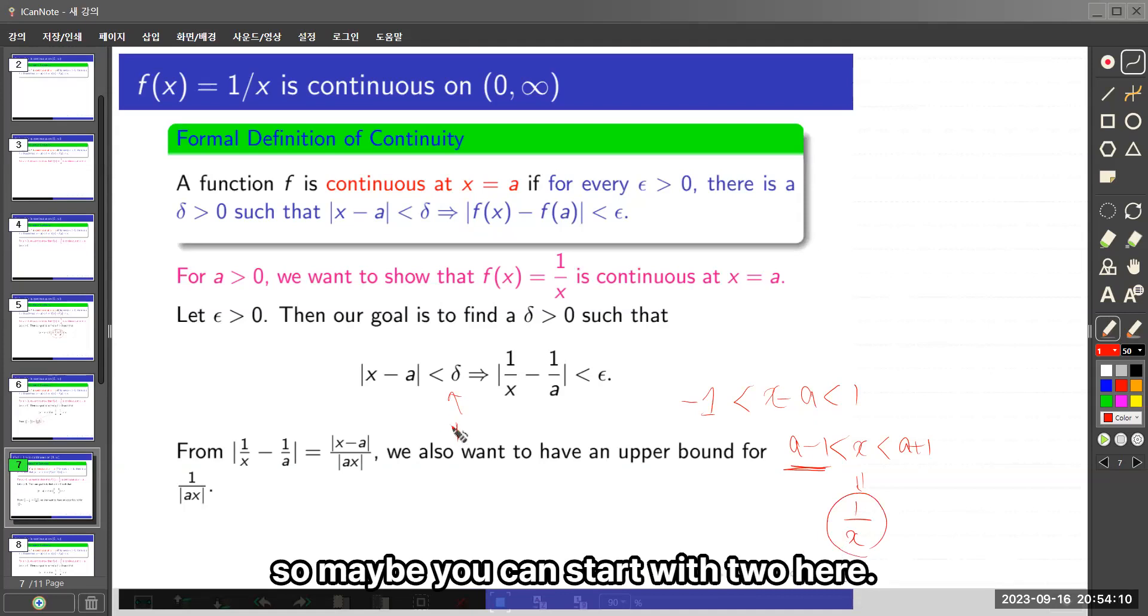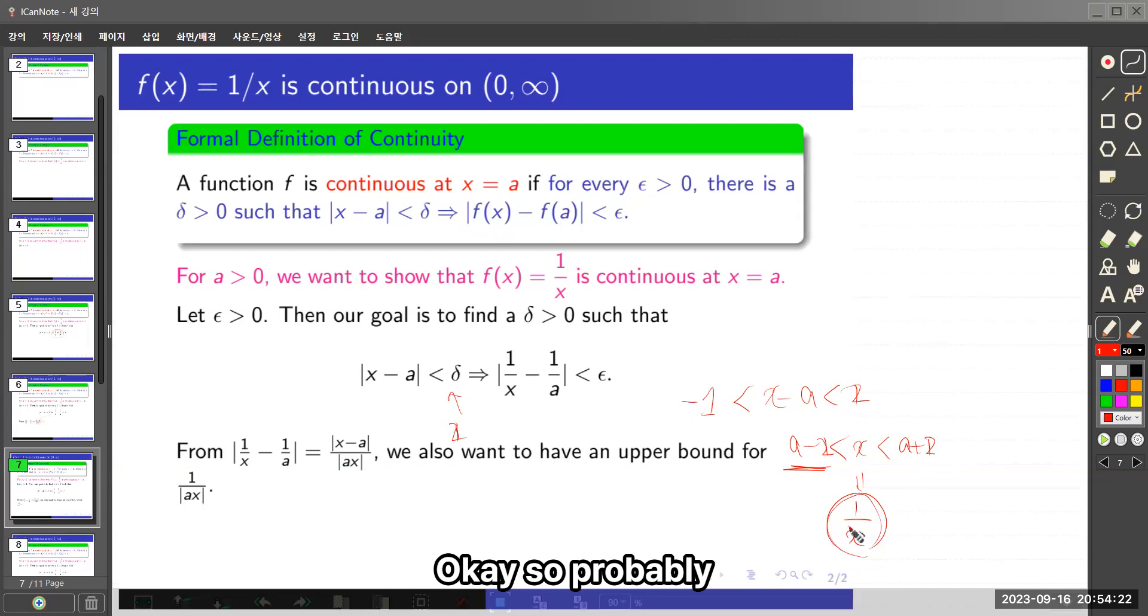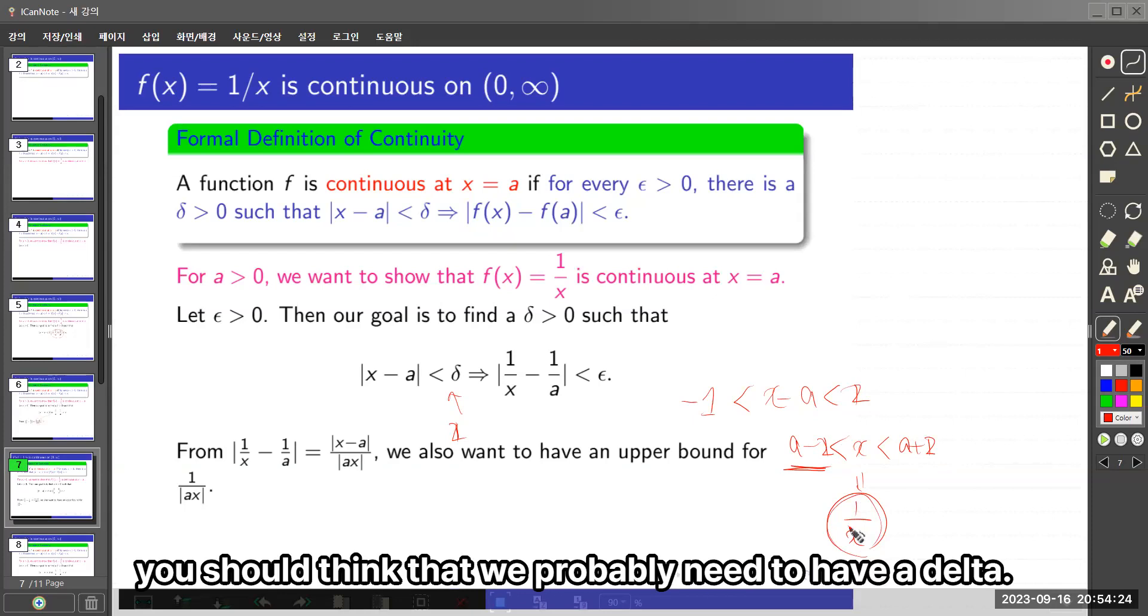So maybe you can start with 2 in here, a similar situation. If a is less than 2, then you still cannot have an upper bound for 1/x.